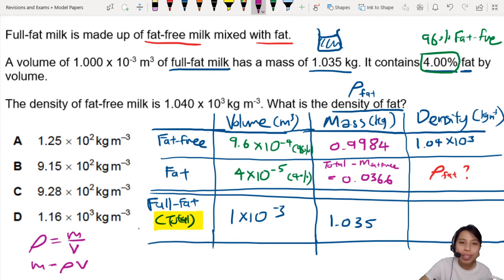Now, this is the beautiful moment. We have enough information to calculate the density of fat already. Yes. Density is mass divided by volume. Okay, 0.0366 divided by 4 times 10 negative 5. Make sure I don't press wrong. Okay, this one looks more correct. 9.15 kg meter negative 3.